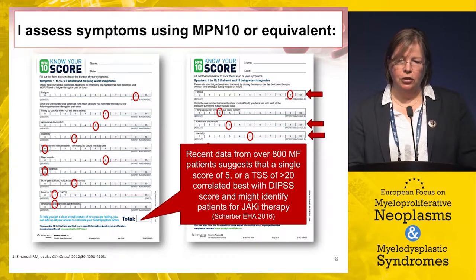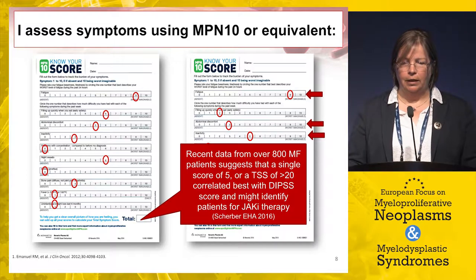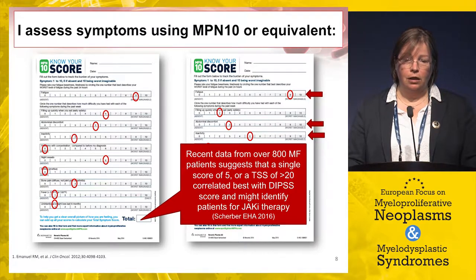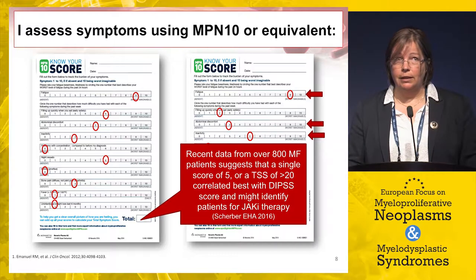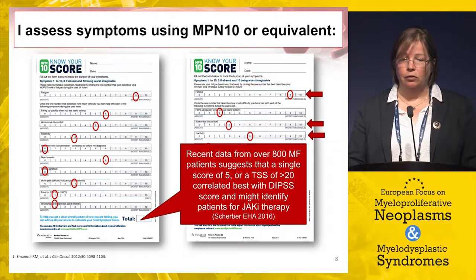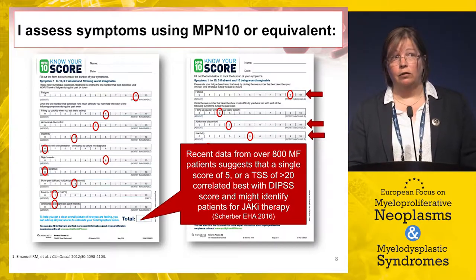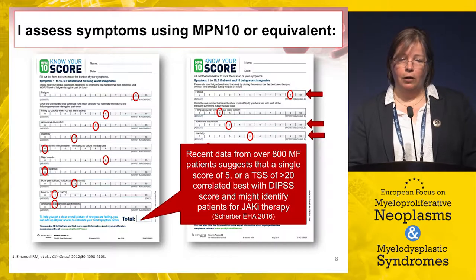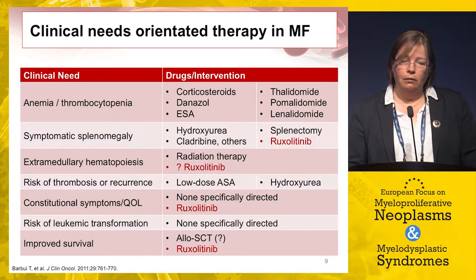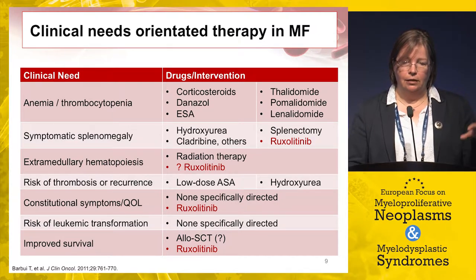Looking at individual symptom scores, Ruben Mesa's group presented at EHA from over 800 myelofibrosis patients in an international analysis: a single symptom score of five or a total symptom score of over 20 indicates a patient likely struggling with symptoms, correlates well with the DIPSS score, and is someone you might want to address. You don't just have to turn to JAK inhibitor therapy, but you need to be thinking about treatments and the patient's individual clinical need.